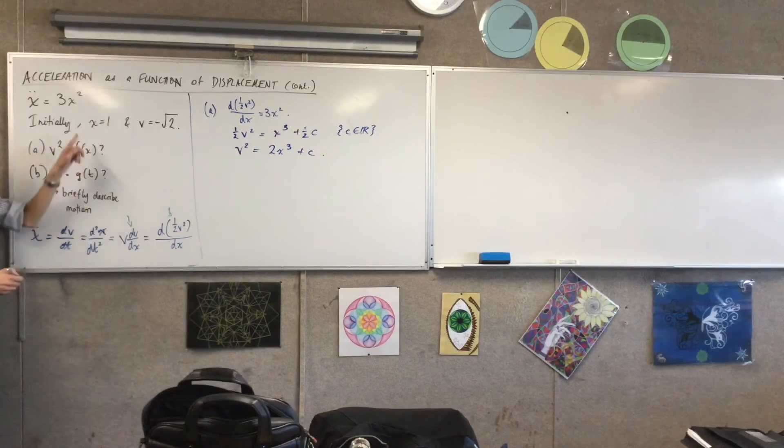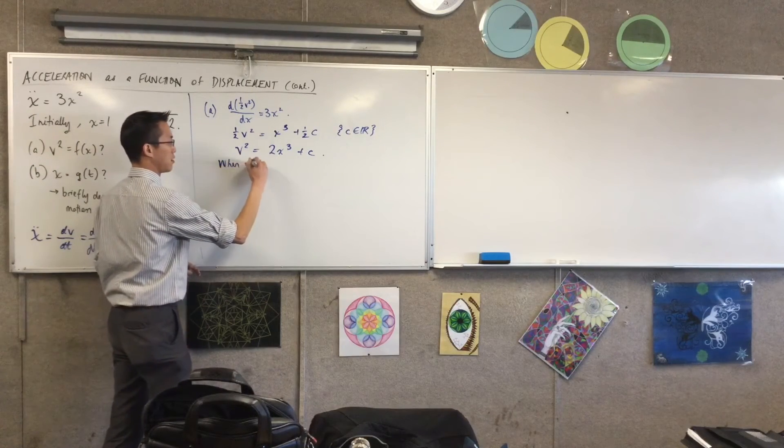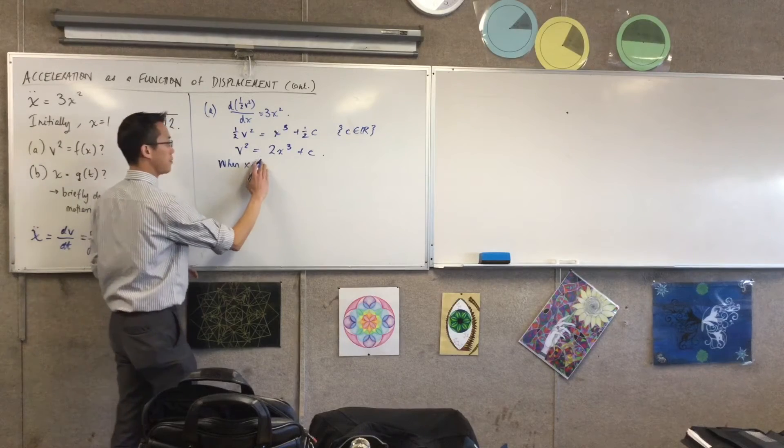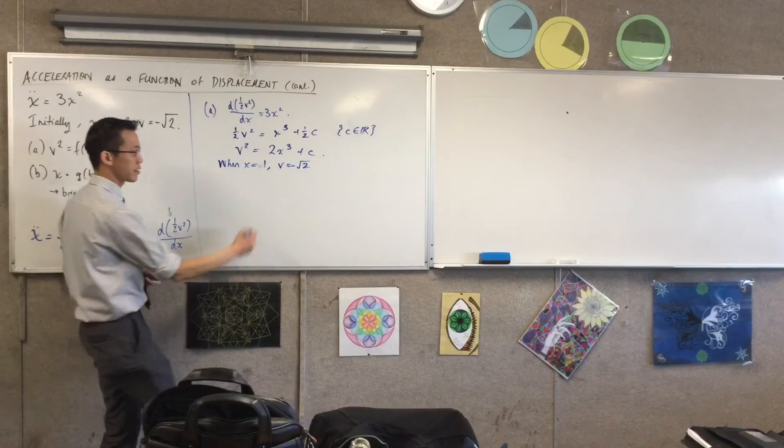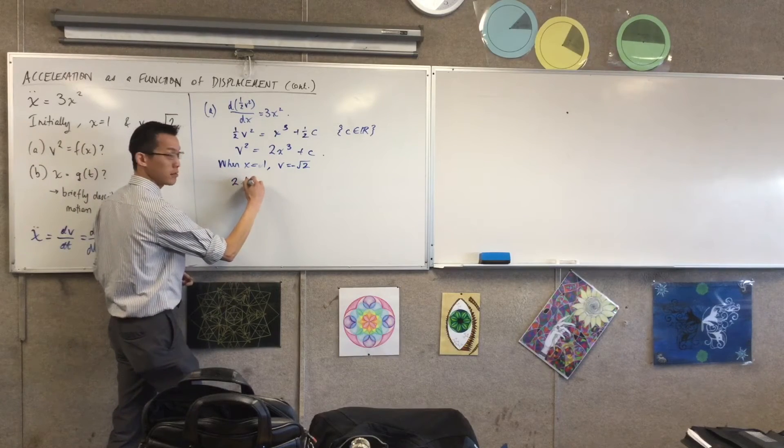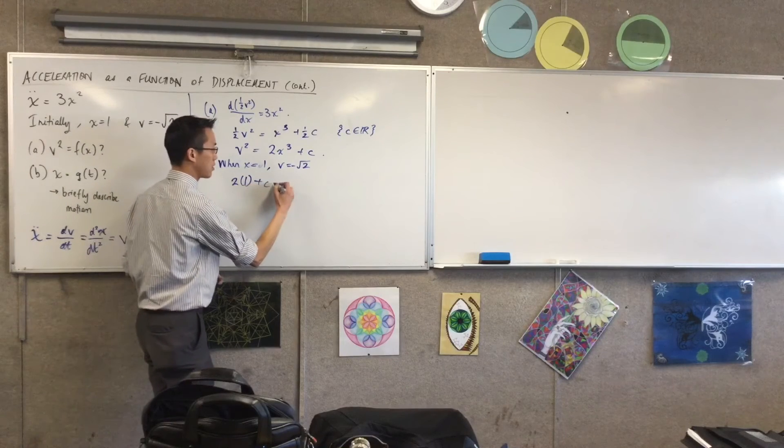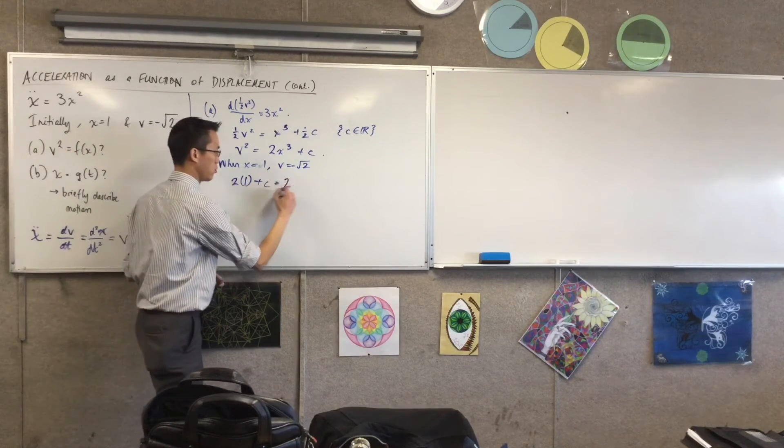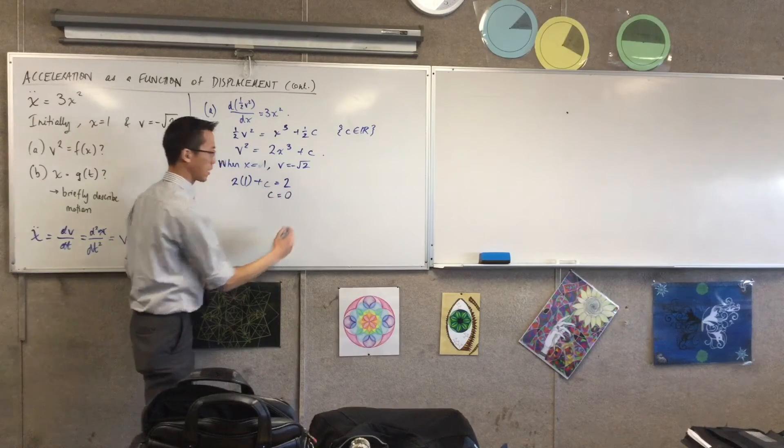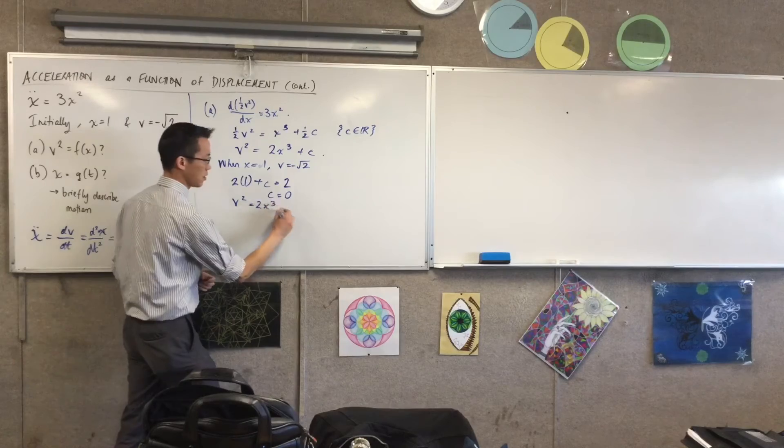So what does this next line look like? This is going to be 2 times 1, I'll just write that bracket so it doesn't look like 2.1, plus my constant equals 2. So c is equal to zero. That's kind of convenient, so I've got v squared equals 2x cubed. Excellent, looks good.